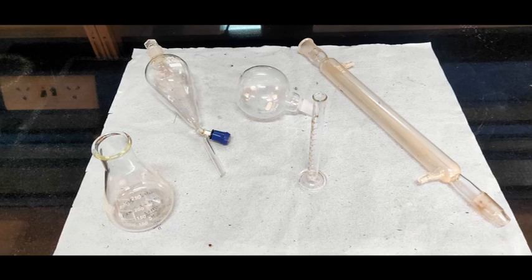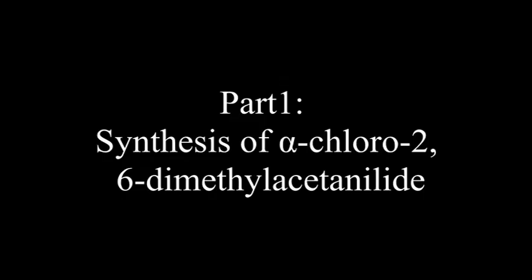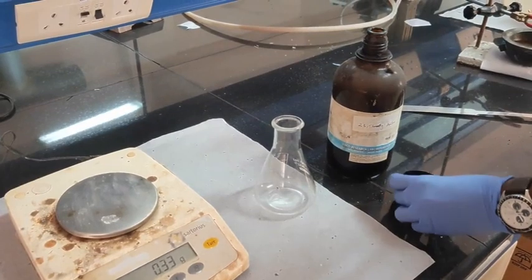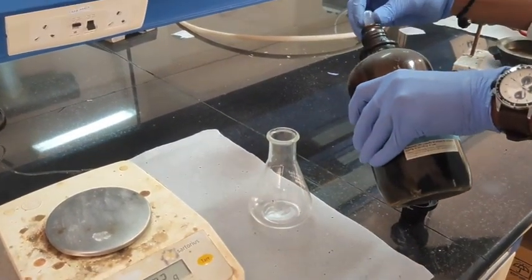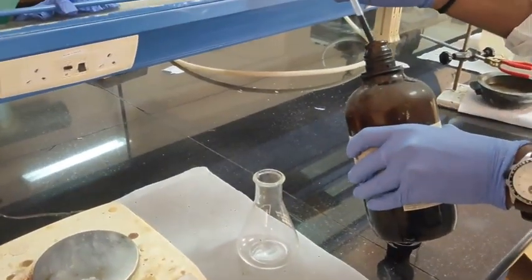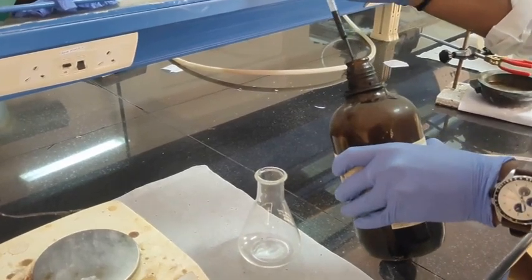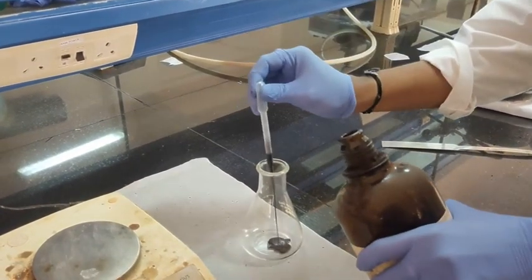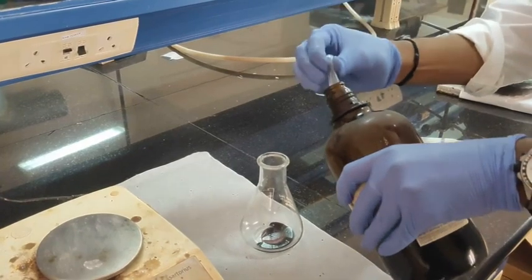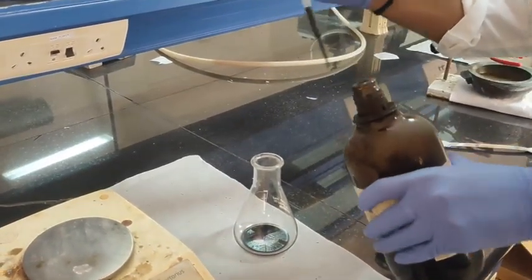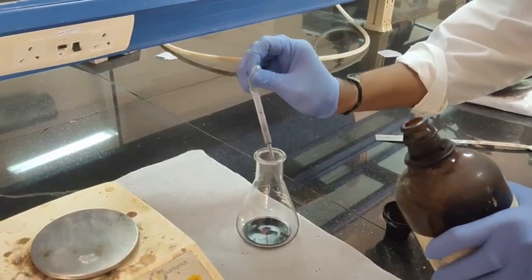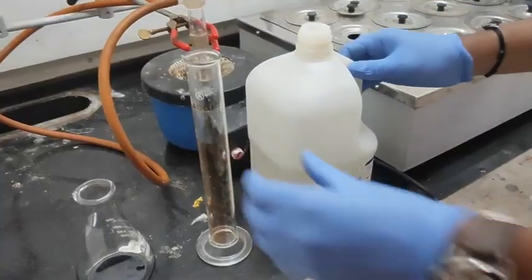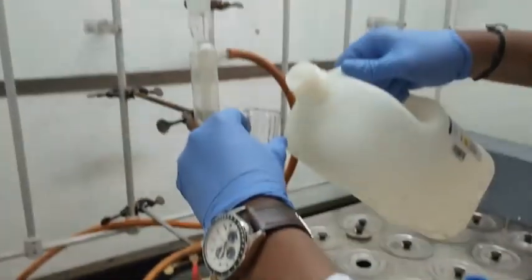Part one: synthesis of alpha-chloro-2,6-dimethyl acetanilide. In a conical flask, add 5 mL of 2,6-dimethyl aniline and add 35 mL of glacial acetic acid.